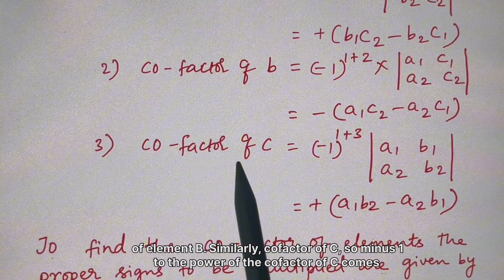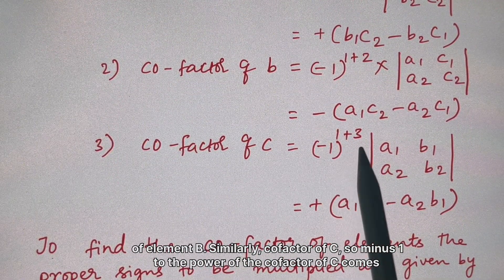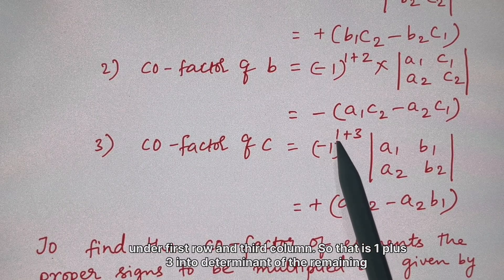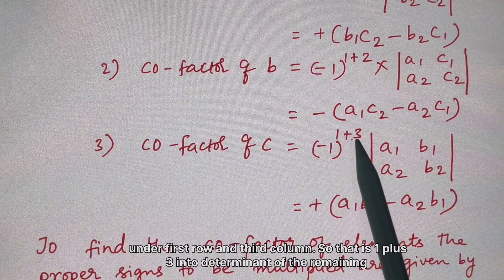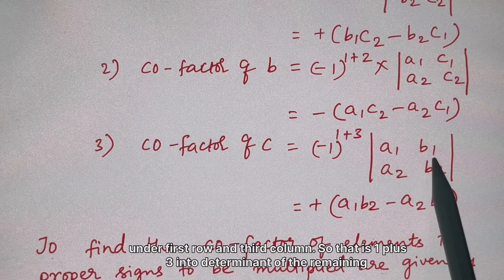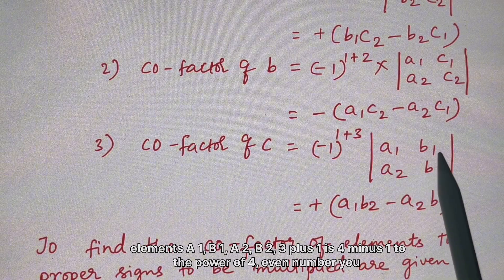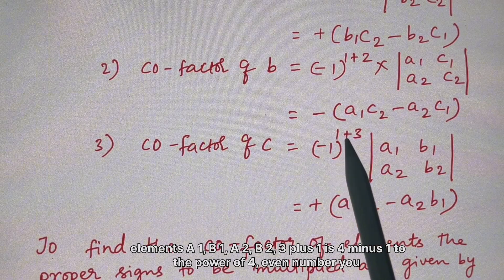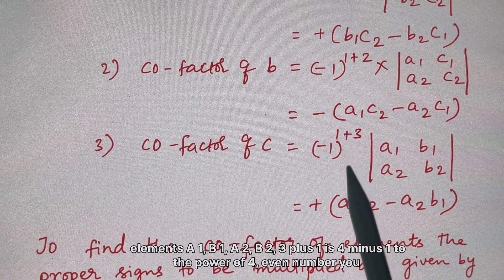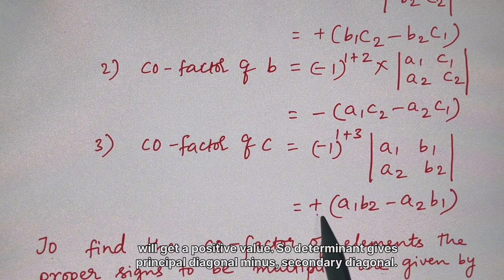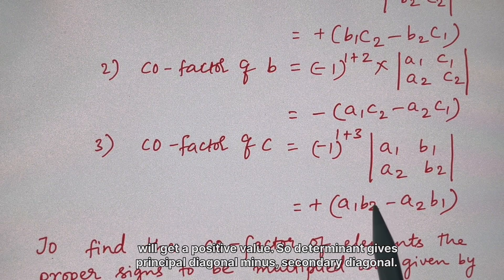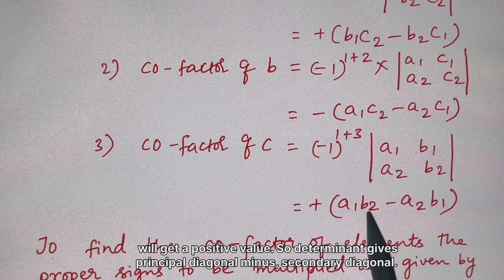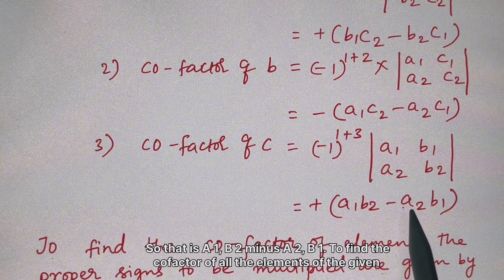Similarly, the cofactor of 'c': 'c' is in the first row and third column, so (-1)^(1+3) = (-1)^4, which is positive (even power). The determinant of the remaining submatrix [a1, b1; a2, b2] gives a1·b2 minus a2·b1, so the cofactor of 'c' equals a1·b2 minus a2·b1.